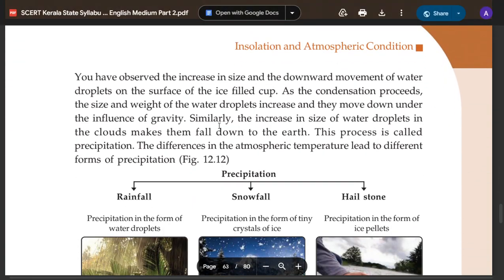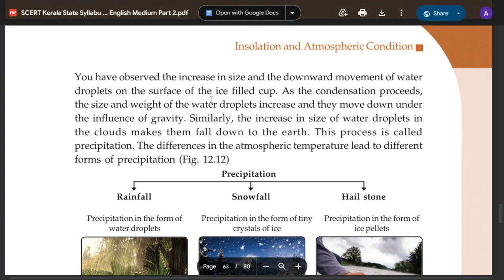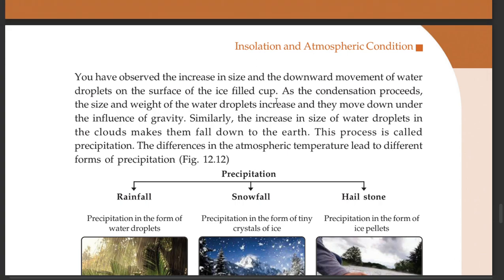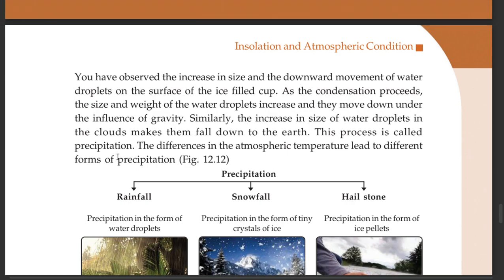You have observed the increase in size and downward movement of water droplets on the surface of an ice-filled cup. As condensation proceeds, the size and weight of the water droplets increase and they move down under the influence of gravity. Similarly, the increase in size of water droplets in the clouds makes them fall down onto the earth. This process is called precipitation.